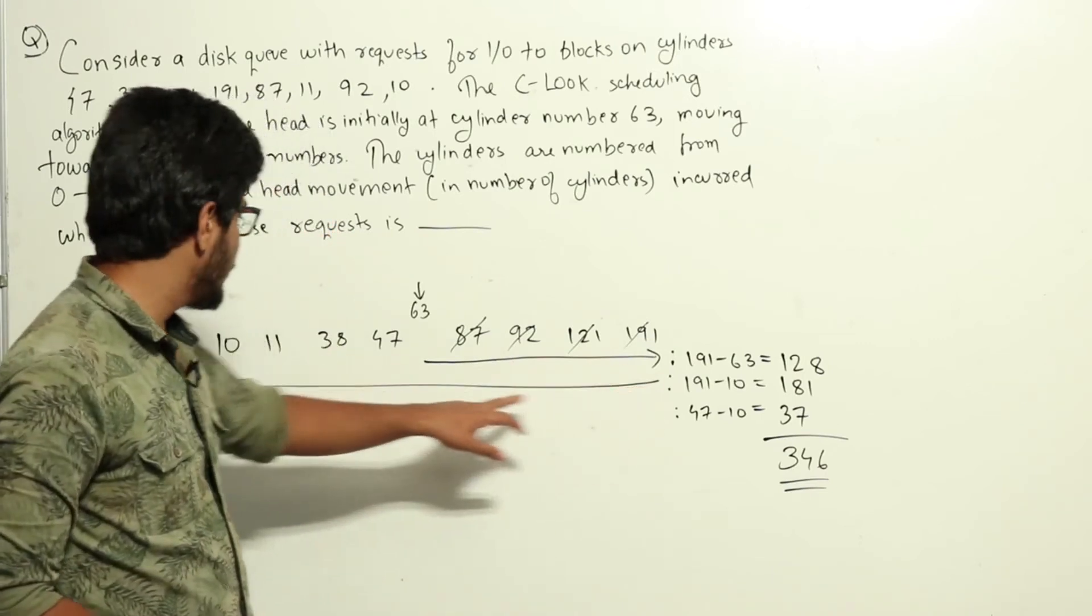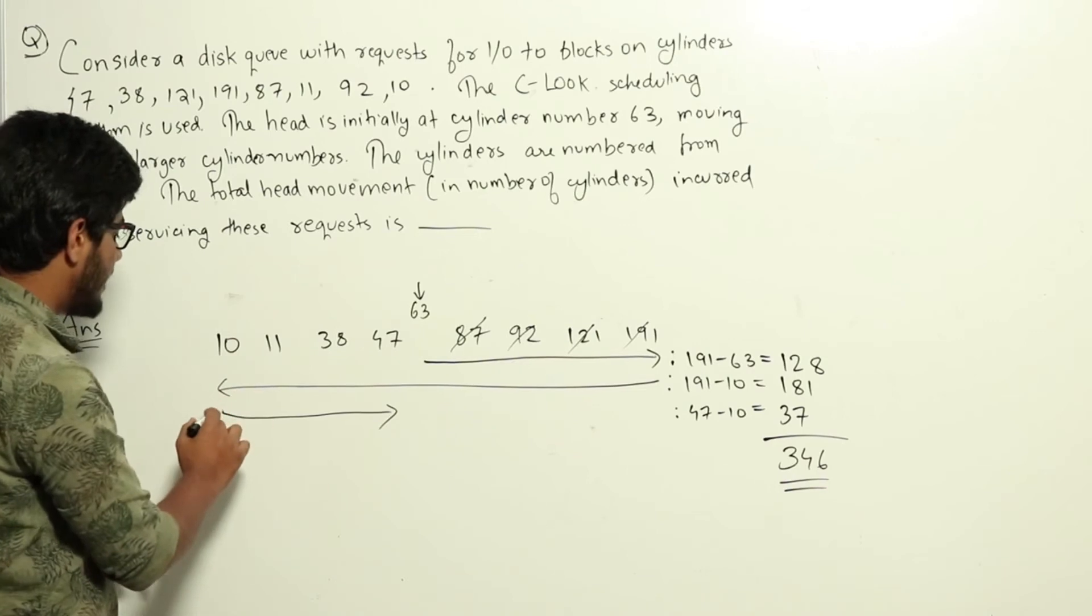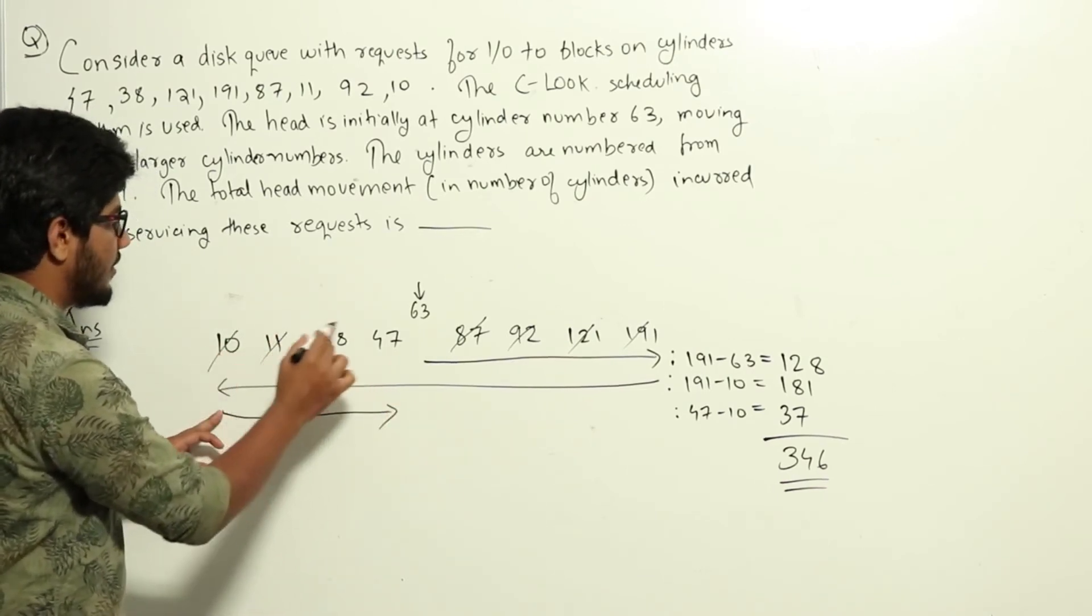From 191, we will move to 10. In this movement, nothing will be serviced. After that, from 10 to 47, we move servicing 10, 11, 38, and 47.